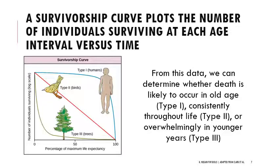Another way to study demography is the survivorship curve, which plots the number of individuals surviving at each age interval versus time. On the x-axis is the percentage of maximum life expectancy, ranging from 0 to 100, which standardizes the data across all types of organisms. This is important because humans often live into their 70s up to early hundreds, birds may routinely live to 30 years, and trees can live several hundred or even a thousand years. Standardizing by percentage of maximum life expectancy allows meaningful comparison, so the 50% point might represent about 15 years for a bird and about 35 years for a human.